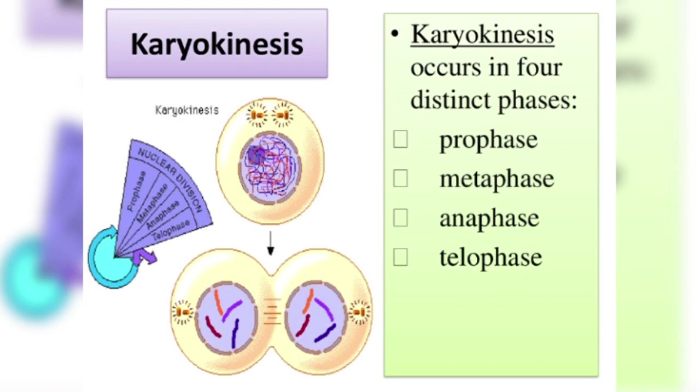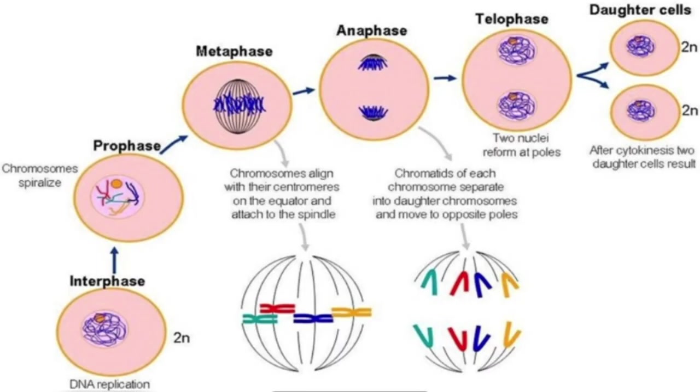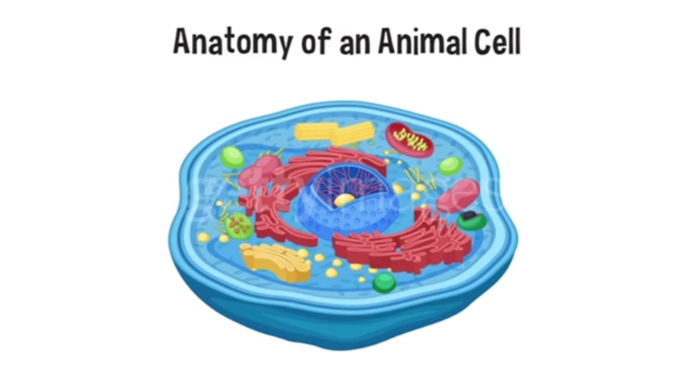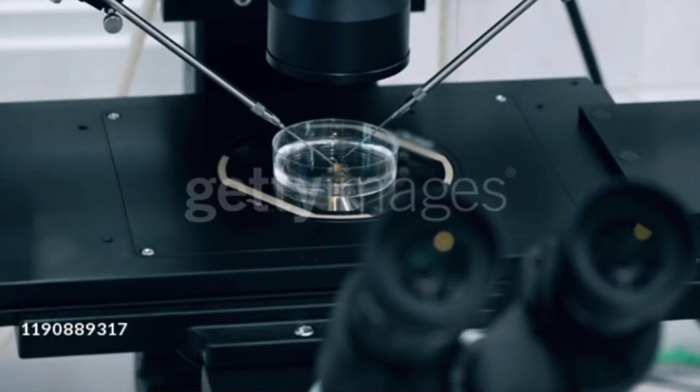Stages of Mitosis. A. Karyokinesis: 1. Prophase (early prophase, mid prophase, late prophase). 2. Metaphase. 3. Anaphase. 4. Telophase. B. Cytokinesis: A. In animal cells, cell furrow. B. In plant cells, cell plate.